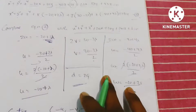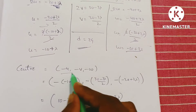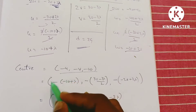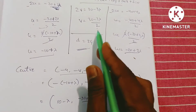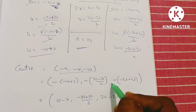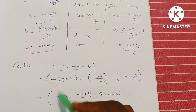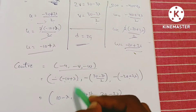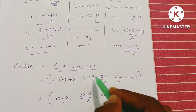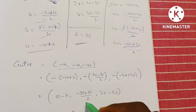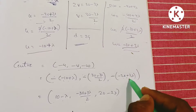The center of the sphere is (−U, −V, −W): (−(−10 + λ), −(30 − 3λ)/2, −(−20 + 2λ)) = (10 − λ, −30 + 3λ)/2, 20 − 2λ).